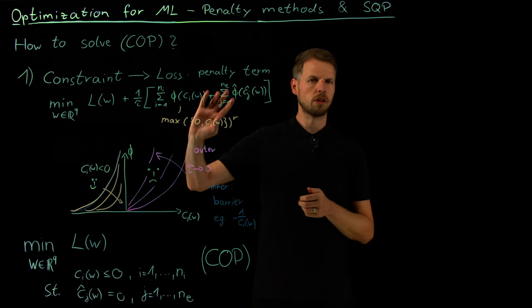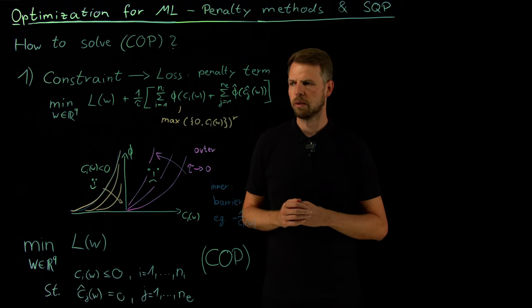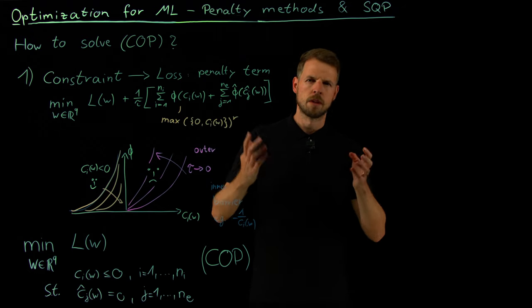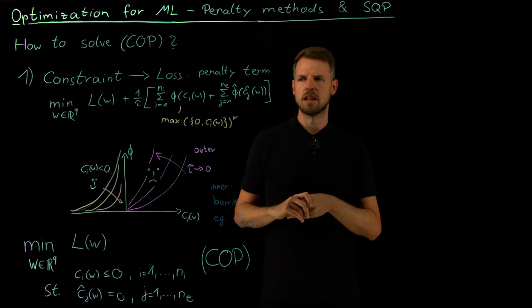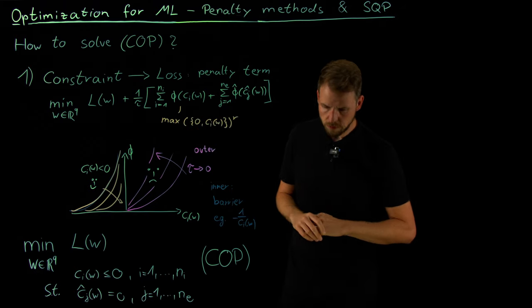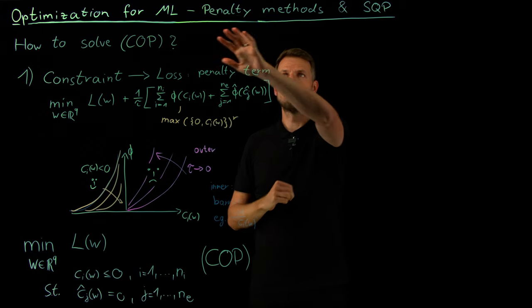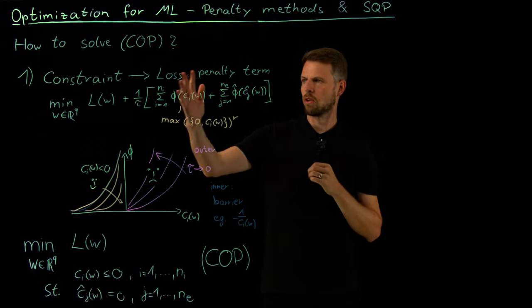So we see penalty methods, whether it's an outer penalization or whether it's this barrier method, are good ways to simply transform a constraint optimization problem into an unconstrained one. And depending on how severe you want to enforce your constraints, you would stick to barrier methods. Here it's apparently obvious that we cannot violate the constraint because this will go to infinity. Or otherwise we can take this one. But here we have to accept that some small violation can happen. Still, we are now in business because we need to solve an unconstrained optimization problem. And we know how to do this by now. We can use gradient descent, momentum, stochastic gradient descent, whatever.